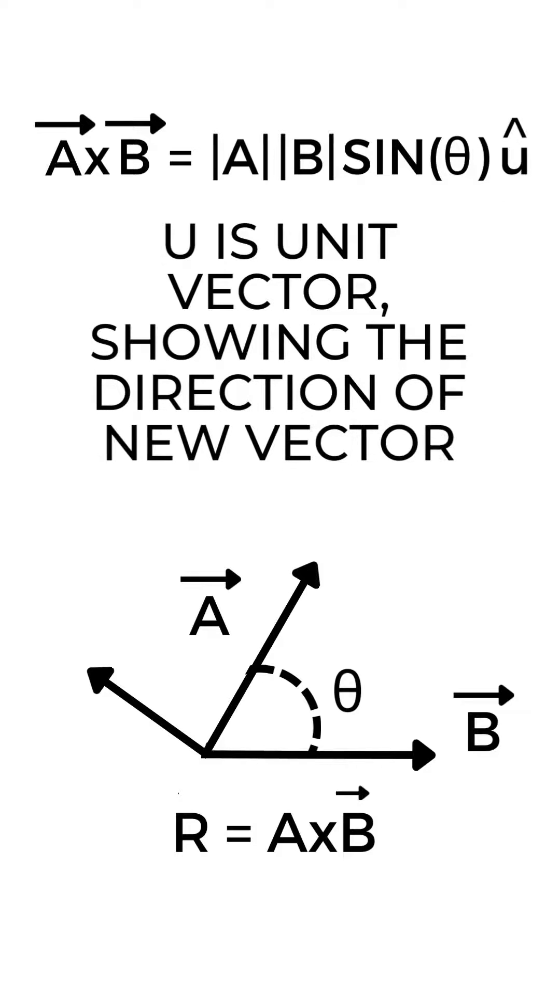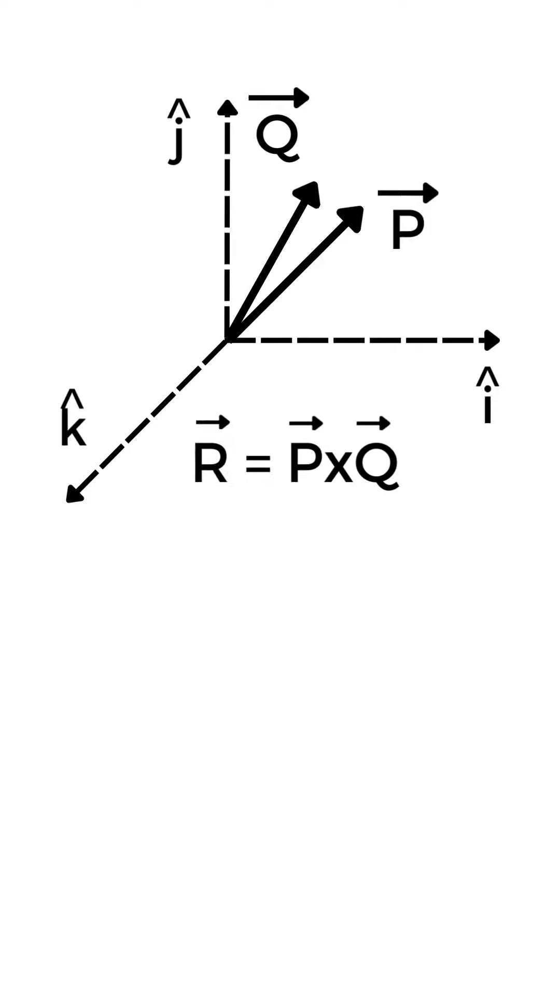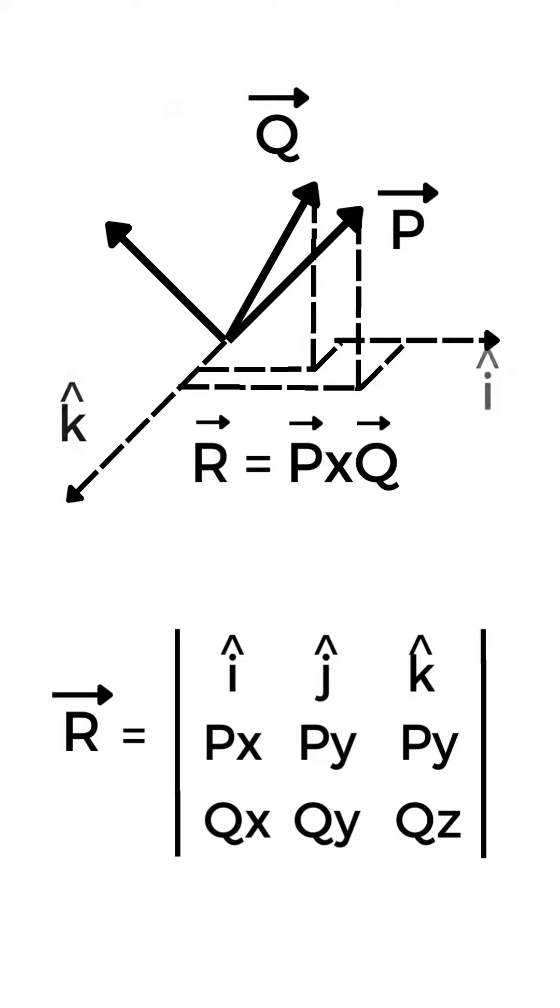The small u with hat is a unit vector showing the direction of the new vector. If we have two vectors P and Q, the cross product of P and Q can be found by taking the determinant of their components in spatial coordinates.